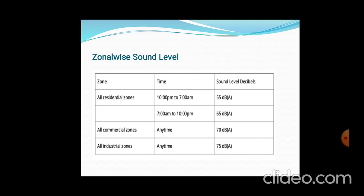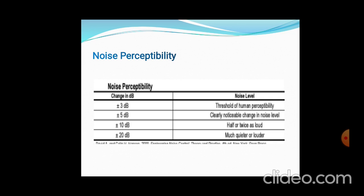Zonal noise standards: all residential zones — 55 dB during nighttime (10 PM to 7 AM) and 65 dB during daytime (7 AM to 10 PM); all commercial zones — 70 dB at any time; all industrial zones — 75 dB at any time. Residential areas have very low permissible decibel levels, commercial areas are higher than residential, and industrial zones have the highest.